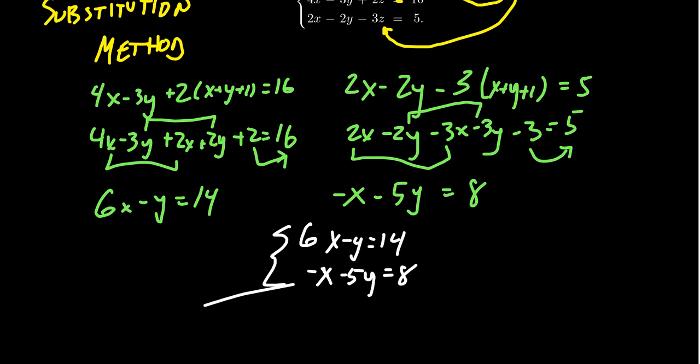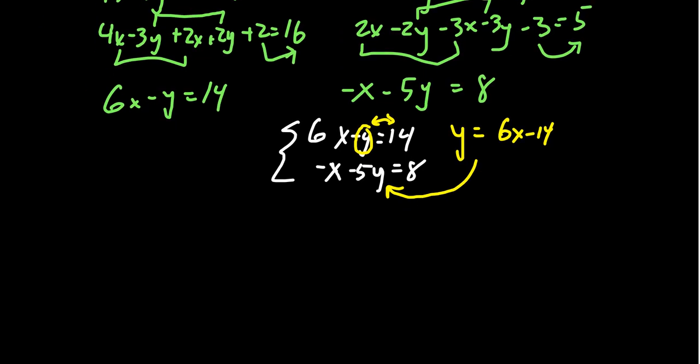I'm going to keep on using substitution just for the sake of it here. So if we take the first equation, the y, if we swap the places of the y and the 14, we're going to get that y equals 6x minus 14. And then we can substitute that into the other equation there. And upon doing that, we're going to see that negative x minus 5 times 6x minus 14. This is equal to 8.